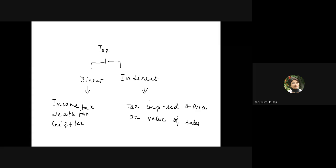There are different types of commodities in reality. Consider milk — we call it a merit want. There are several commodities or services which we call merit wants. Whatever be the income of the family, a child needs milk, aged people need milk, and whatever the household income, children need some basic education at the very least.